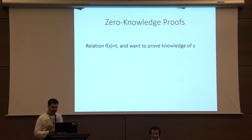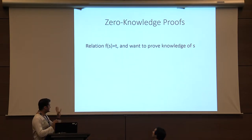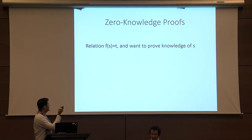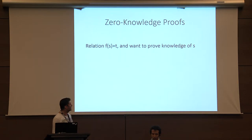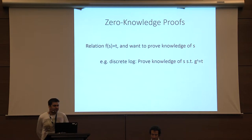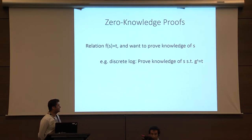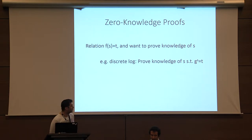Zero-knowledge proofs are important. The most basic way to express it is: you have some relation, some function f, and f(s) equals t — s is your secret, f and t are public — and you want to prove that you have knowledge of s in zero-knowledge. For example, discrete log: you have your generator g, and g to the s equals t for some secret s, and you want to prove that you know s in zero-knowledge.